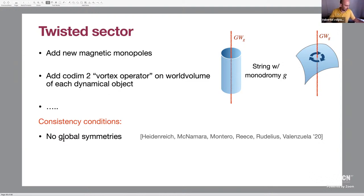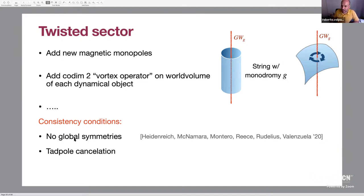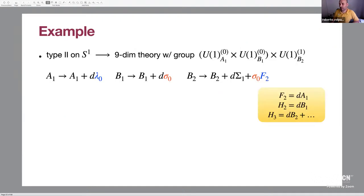The basic idea: you start from a theory with a certain gauge group, pass through an intermediate step which is a potentially inconsistent theory with a global symmetry — one which was broken in the original parent theory — and then you gauge it. To complete your string theory into a consistent theory of quantum gravity, you follow some consistency conditions. One of the strongest is that the final product of the orbifold procedure should have no global symmetries. This is very constraining — it puts strong constraints on what kind of dynamical objects you need to have in your string theory and what worldvolume fields they might carry.